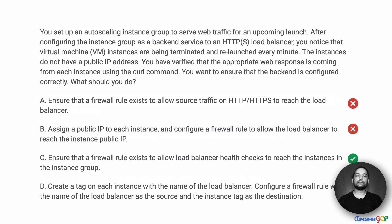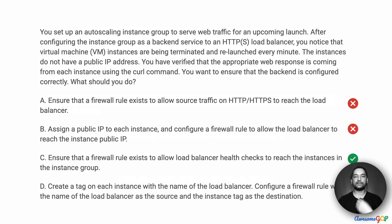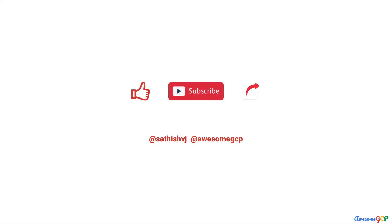The way to solve this is to ensure that a firewall rule exists to allow health checks to reach the instances. These health checks come from specific IP addresses belonging to special software called probers that check the health of the instances. If you found that content useful, subscribe to check out all the new upcoming content.